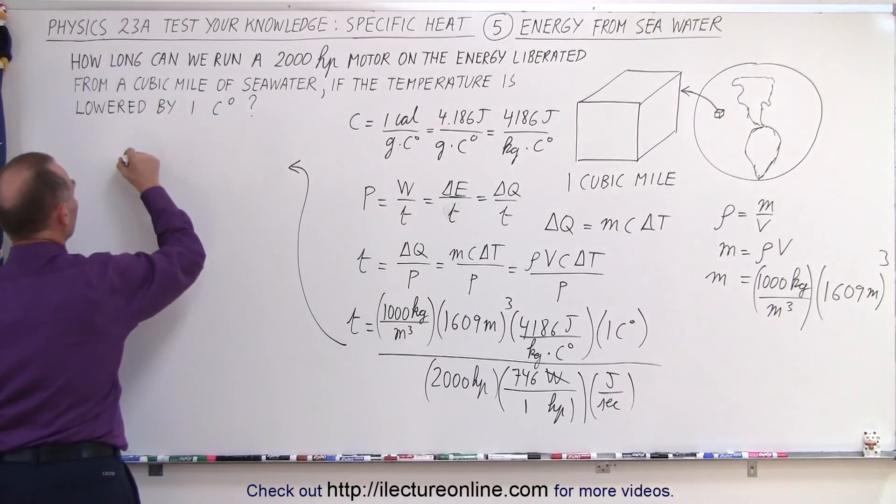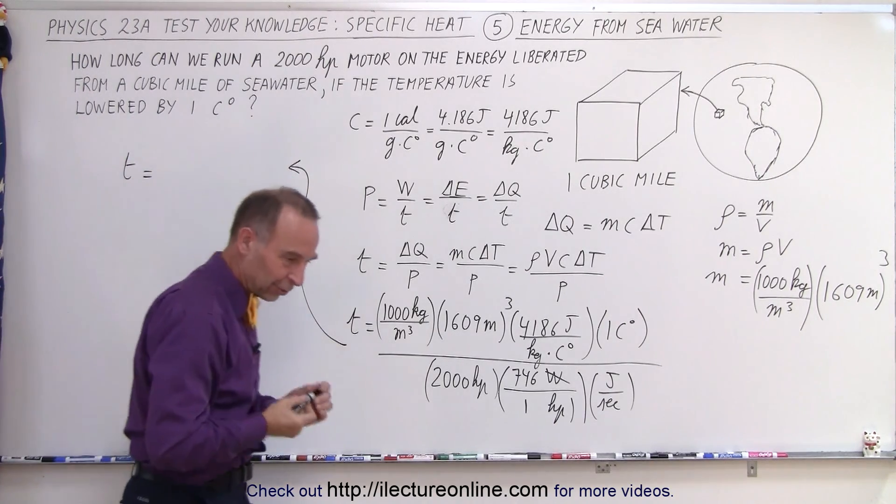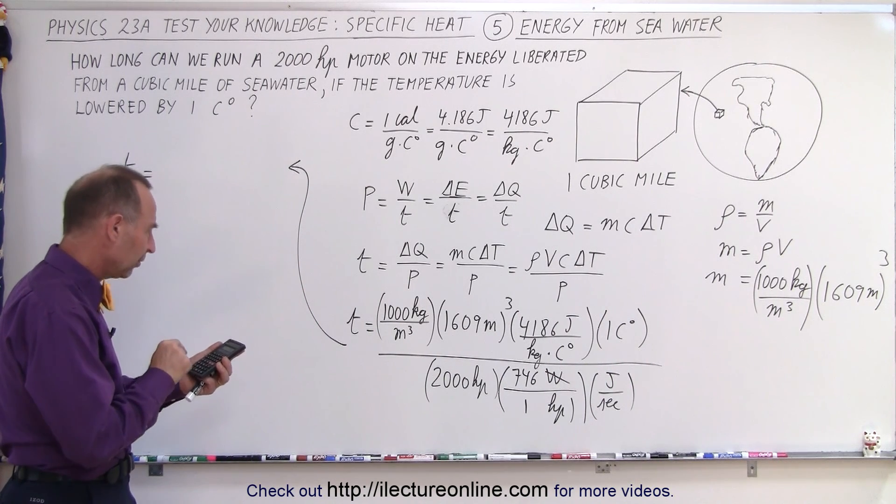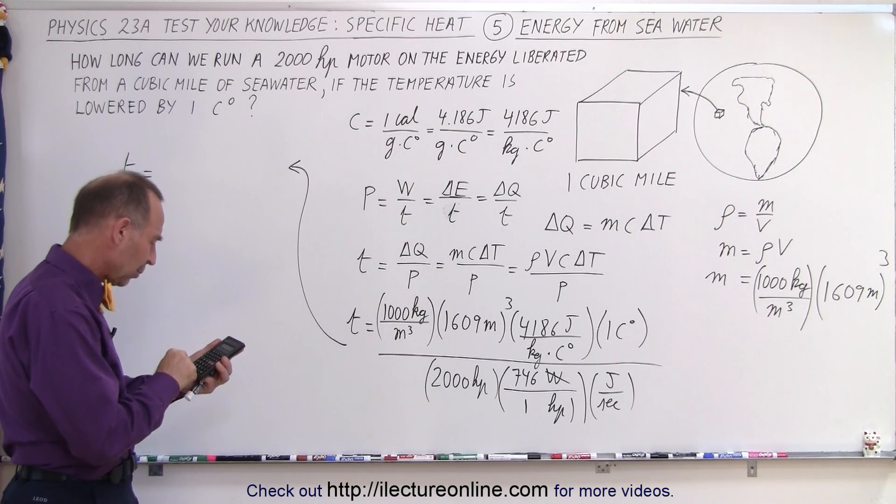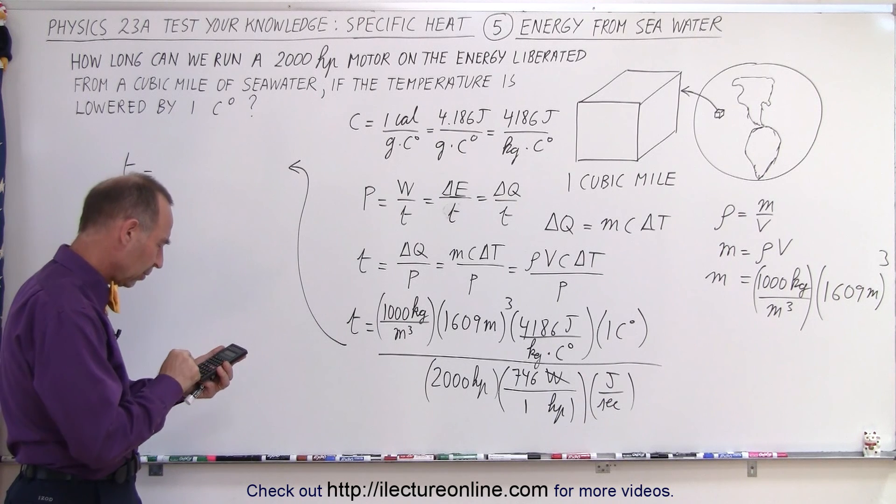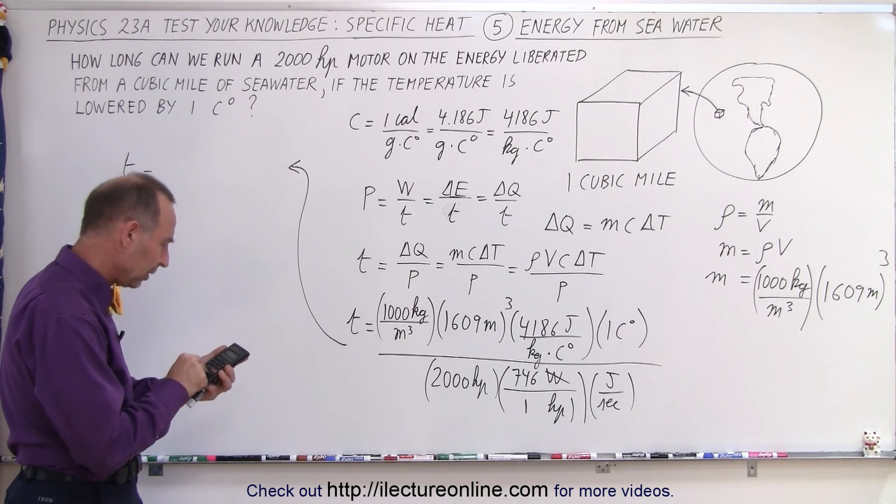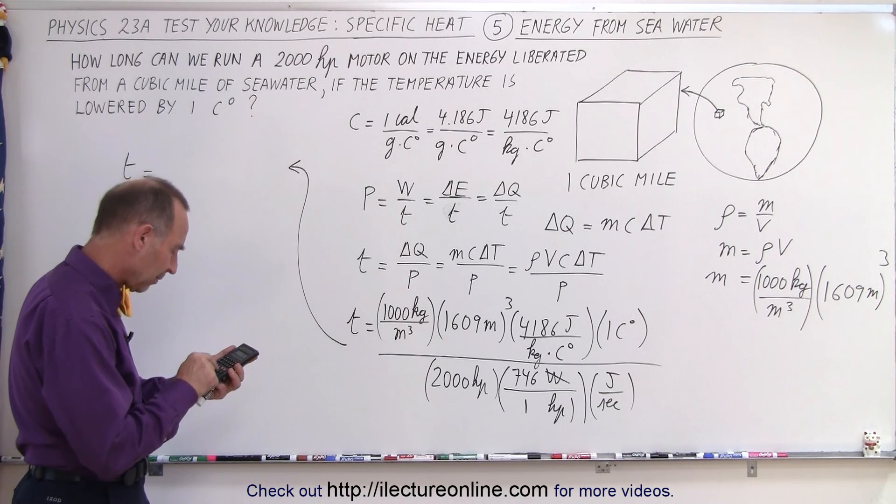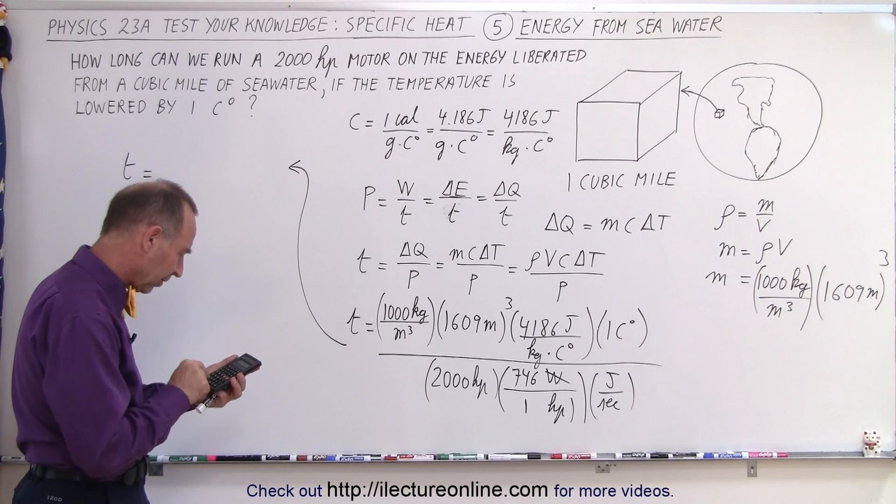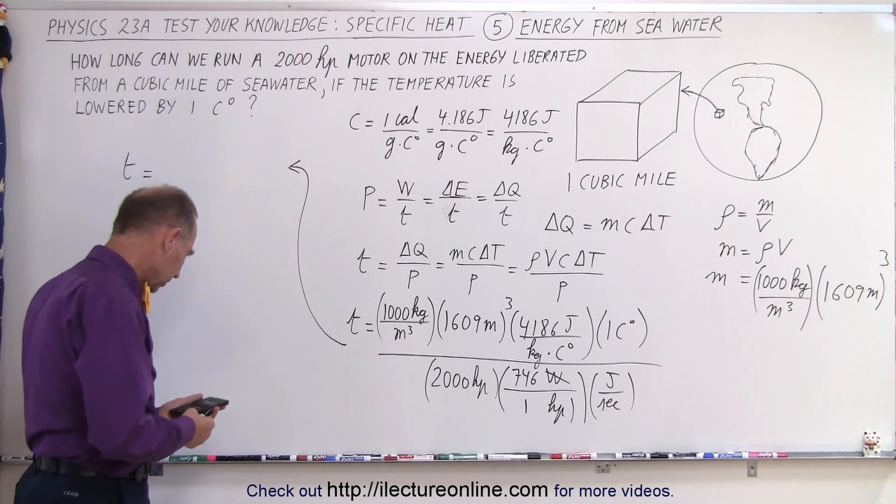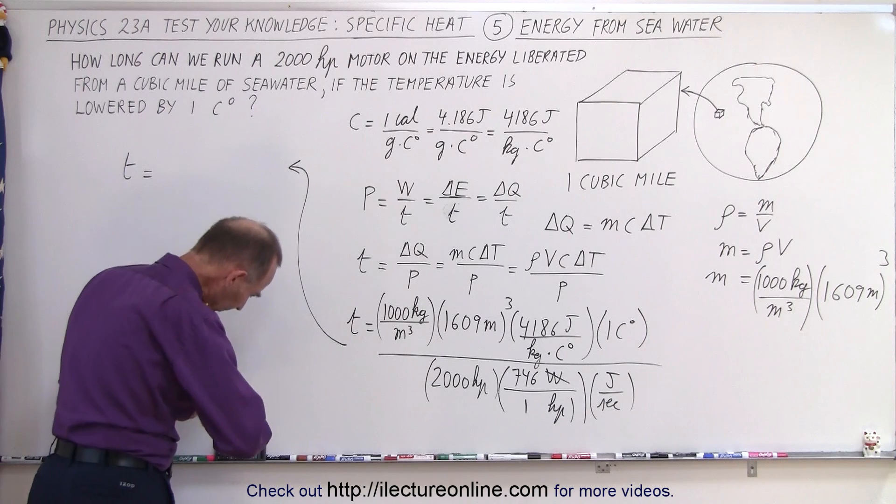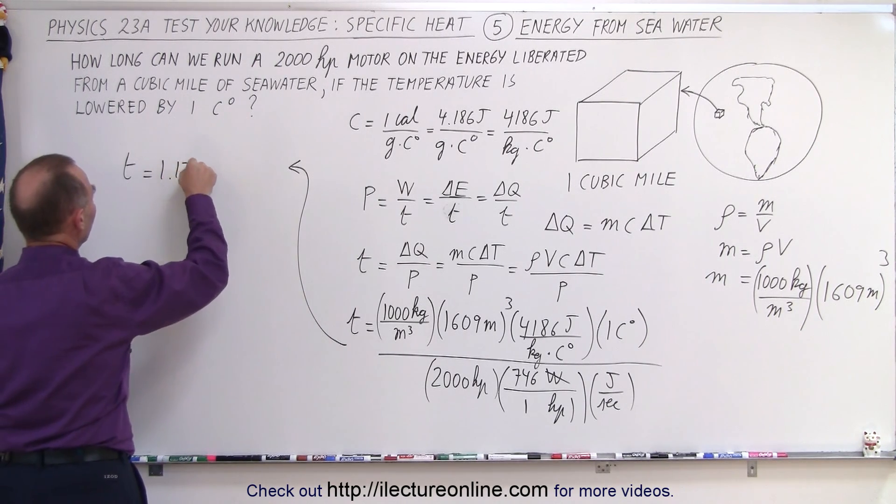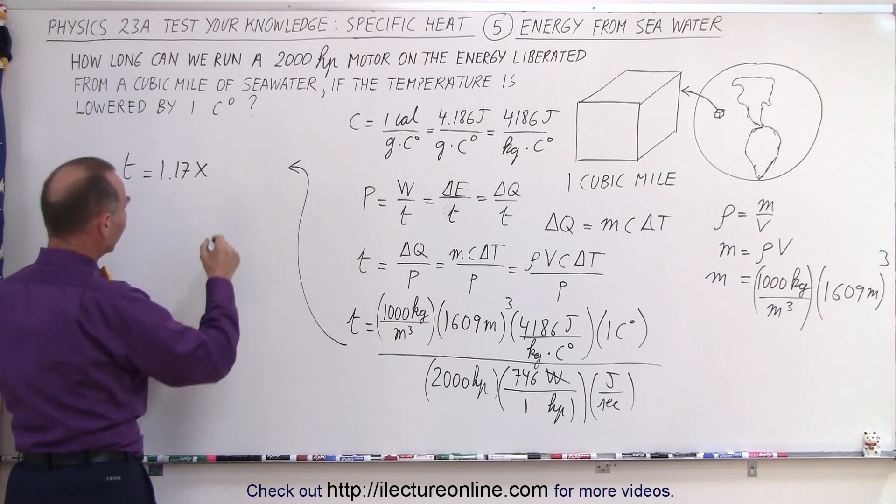So finally, the total time required equals 1,000 times 1,609 cubed times 4,186 divided by 2,000 and divide by 746. And that gives us 1.17 times 10 to the 10 seconds.